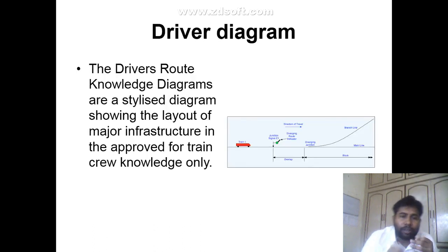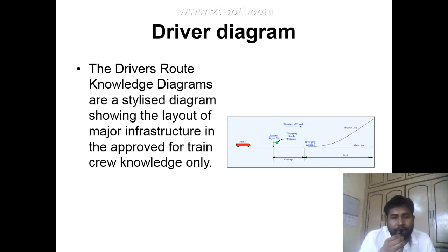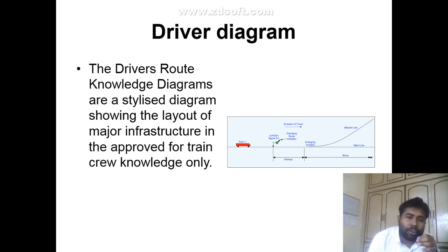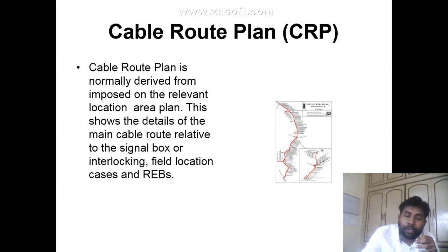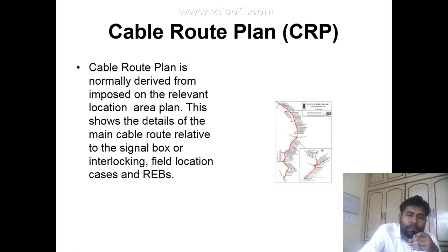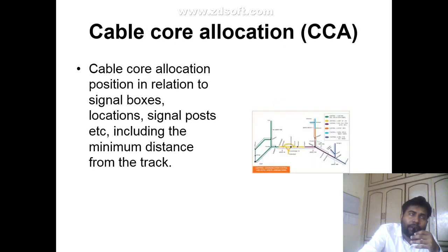Next is the driver diagram. The driver route knowledge diagram is a style diagram showing the layout of major infrastructure for the approved train crew knowledge only. Next is the Cable Route Plan — CRP. The cable route plan is normally derived from and imposed on the relevant location area plan, showing details of the main cable route relative to the signal box, interlocking, field location cases and REVs.